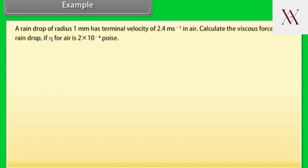Example. Let's take an example on Stokes law. A raindrop of radius 1 mm has terminal velocity of 2.4 m per second in air. Calculate the viscous force on the raindrop if eta for air is 2 times 10 to the power minus 4 poise. Let's see the solution. Given values are R equals 1 mm which can be written as 0.1 cm, V equals 2.4 times 10 square cm per second, eta equals 2 times 10 to the power minus 4 poise.